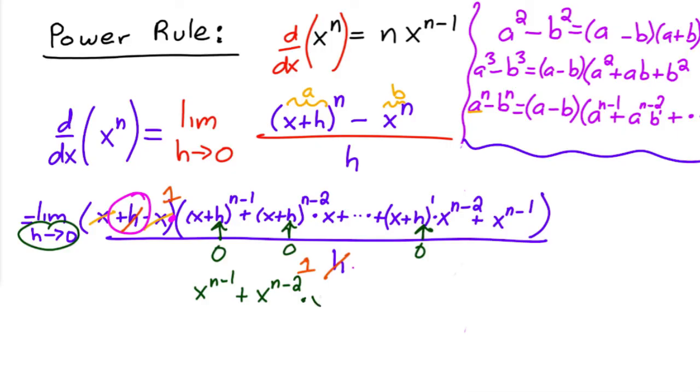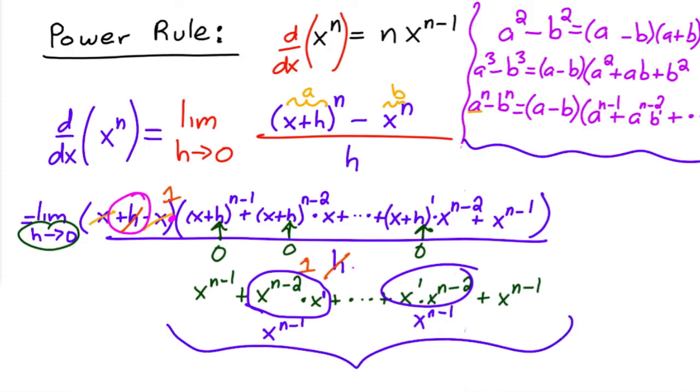This is x to the n minus one plus x to the n minus two times x plus dot dot dot plus x to the one times x to the n minus two plus x to the n minus one. Well, take a look at each one of these guys. This one, for example, when you multiply these two together, this guy has an exponent of one. You add the exponents, this would give you x to the n minus one. So all of these, this one as well, is an x to the n minus one.